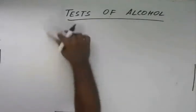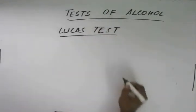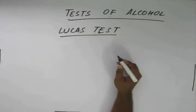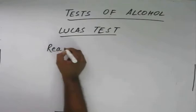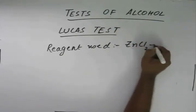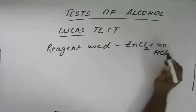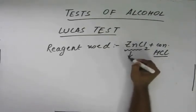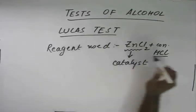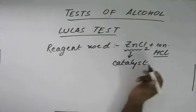Now we move on to a very famous test known as the Lucas test. This test is used to distinguish between 1°, 2°, and 3° alcohols. The reagent used is ZnCl₂ plus concentrated HCl. Alcohols do not readily react with HCl; it needs a catalyst that will speed up the process and enhance the rate of reaction.